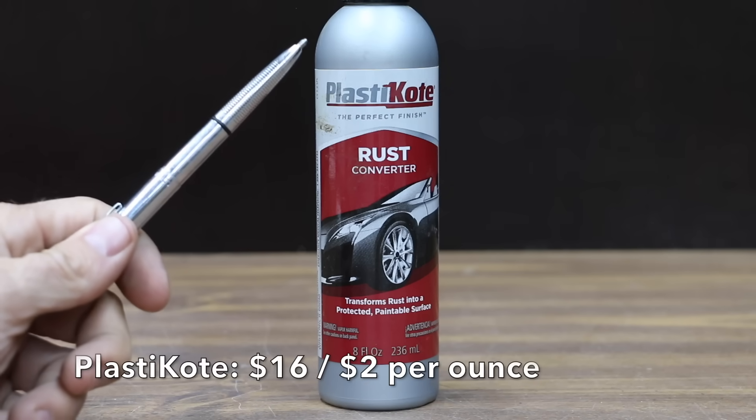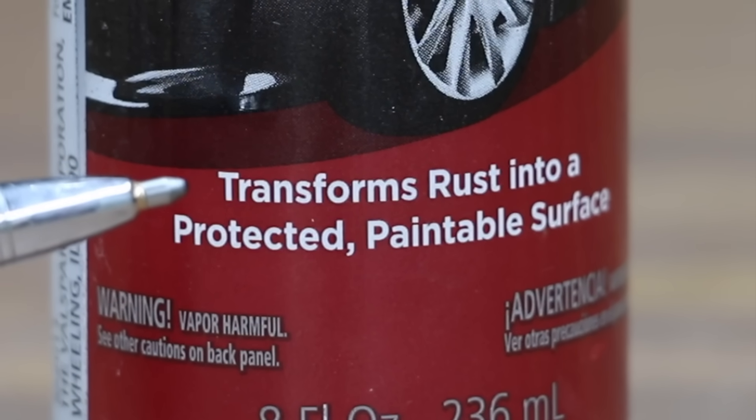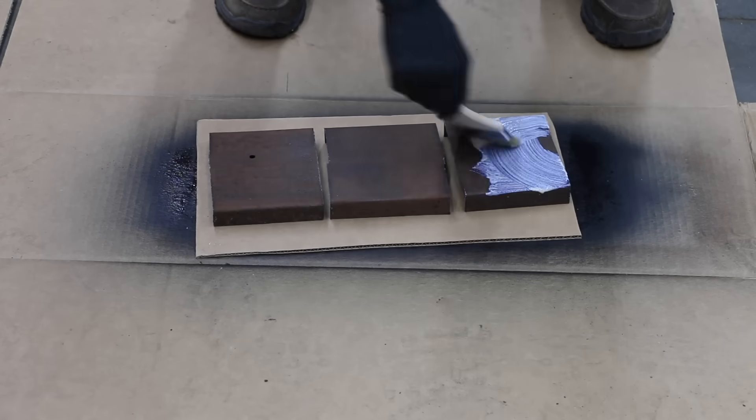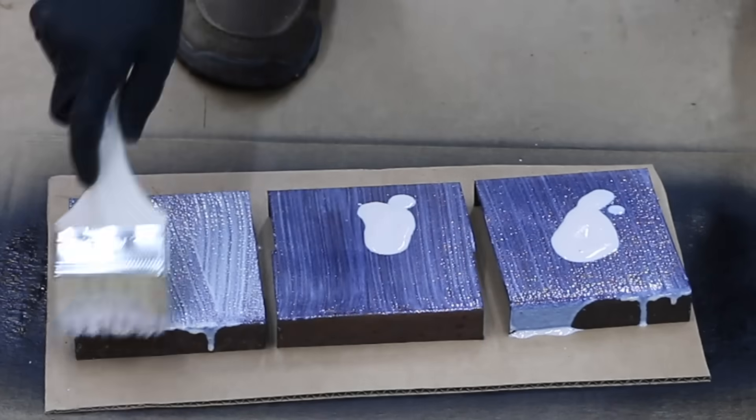At a price of $16 for 8 ounces or $2 per ounce is this Plastic Coat Rust Converter. Transforms rust into a protected, paintable surface. Remove loose rust and paint flakes using a wire brush or sanding. Apply rust converter directly to the rusted area and brush on evenly.